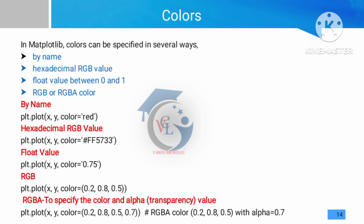Using plt.plot, you can set color by name. Floating values range from 0 to 1. For RGB values: R is red, G is green, B is blue. You can also use RGBA, where A is the alpha transparency value. For example: 0.2 red, 0.8 green, 0.5 blue, with a transparency level of 0.7 — this controls how visible the background is through the color combination.